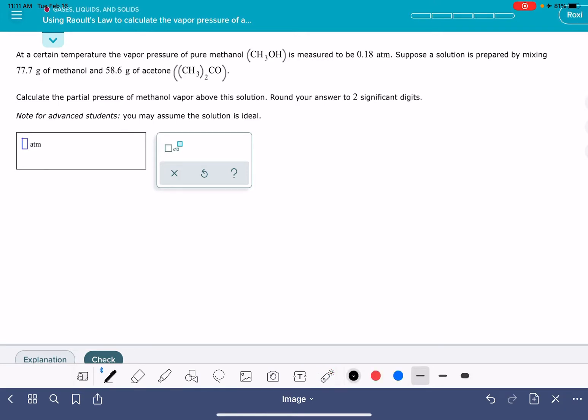There are two different versions of Raoult's law. One of them says the partial pressure of a substance, a component of a solution, is equal to the mole fraction of that substance times the pure vapor pressure of that substance.